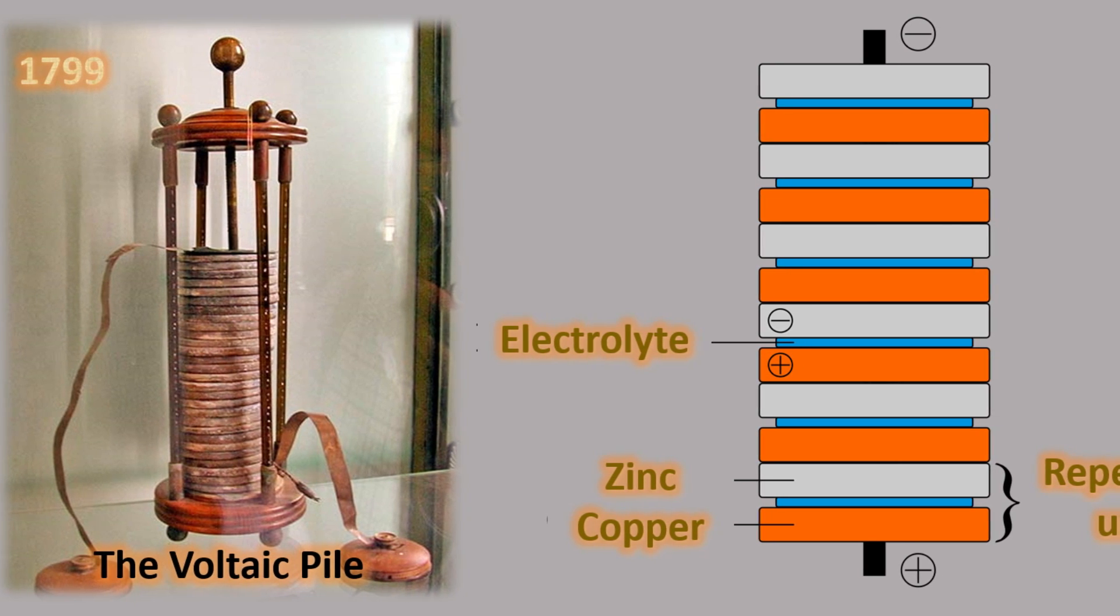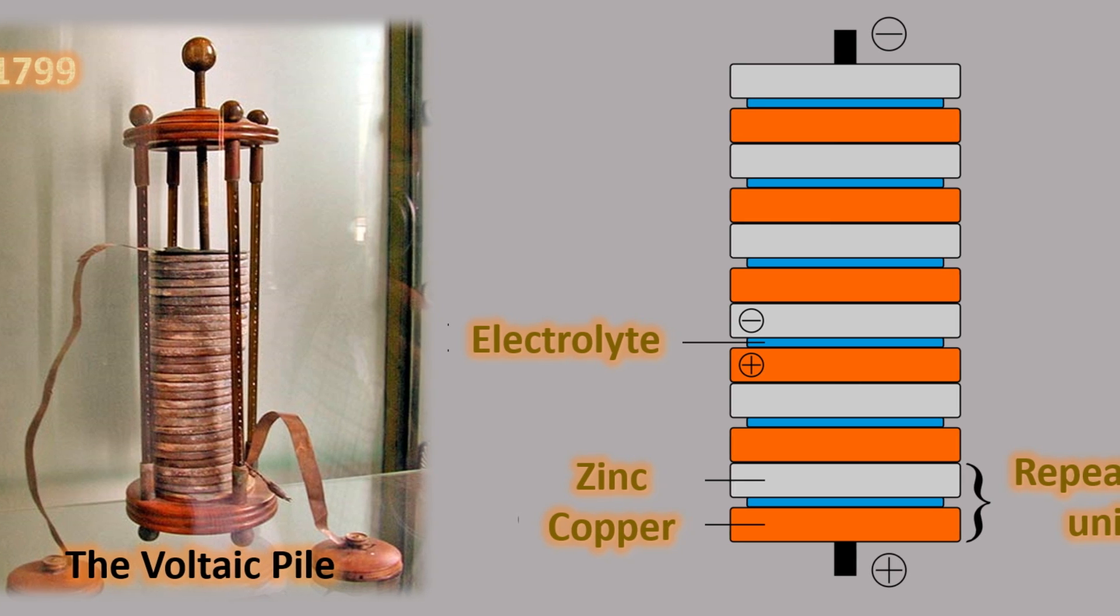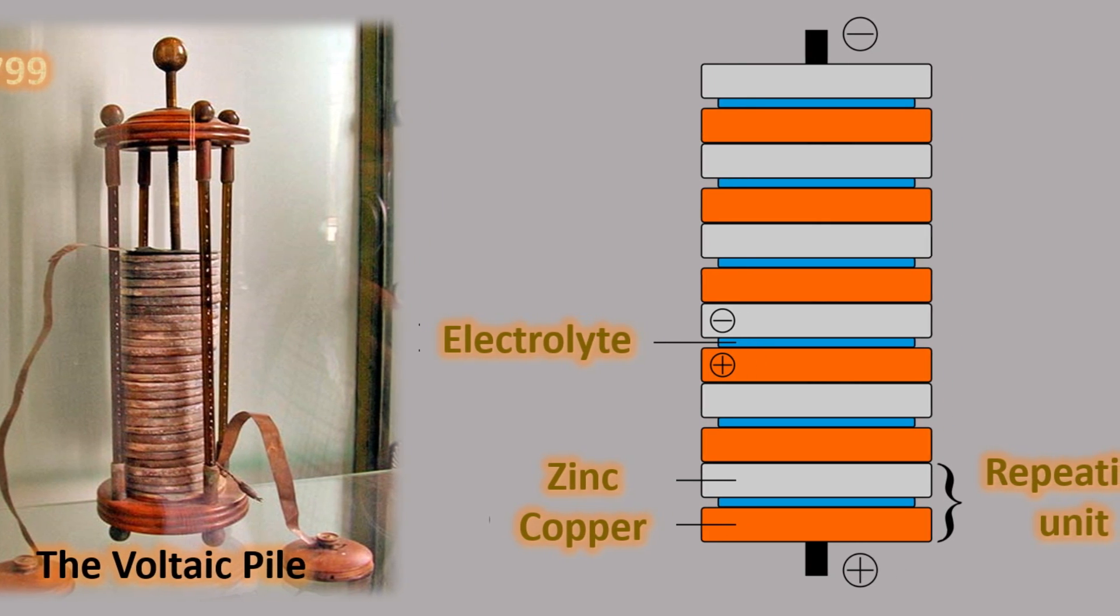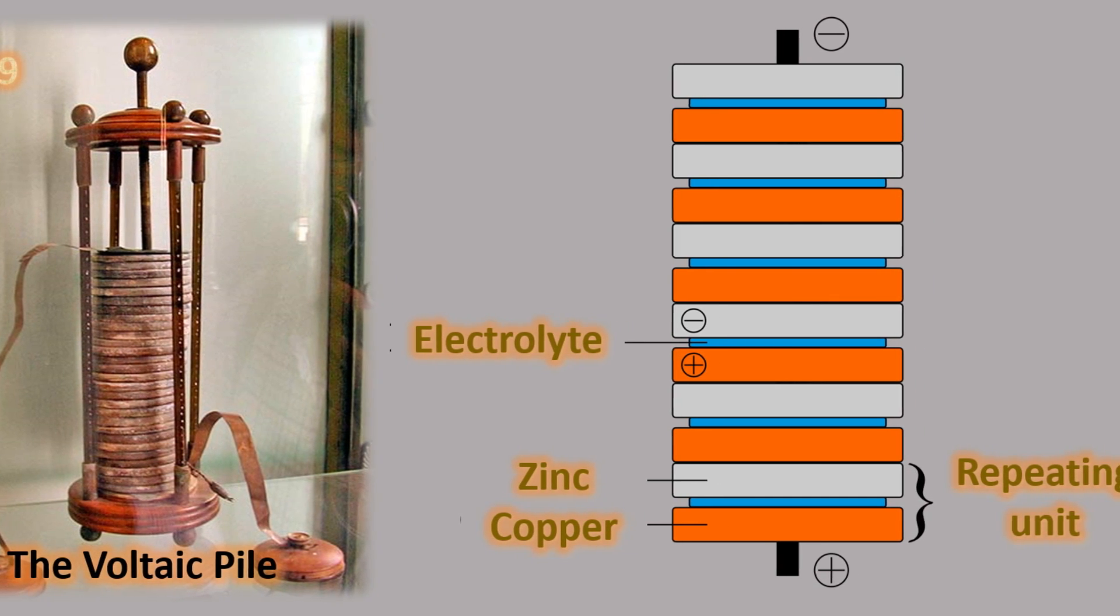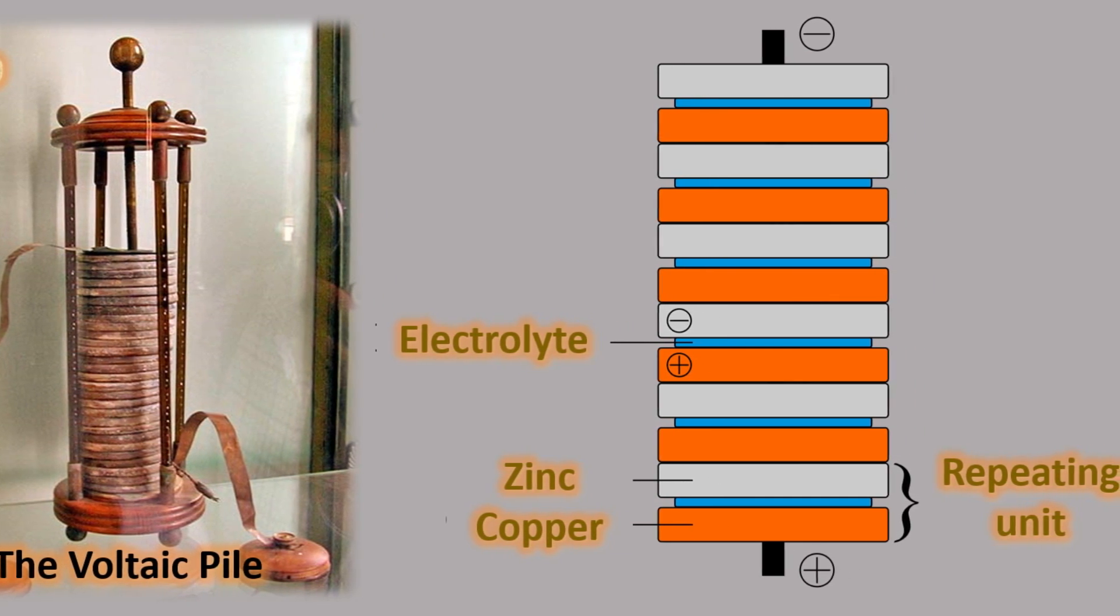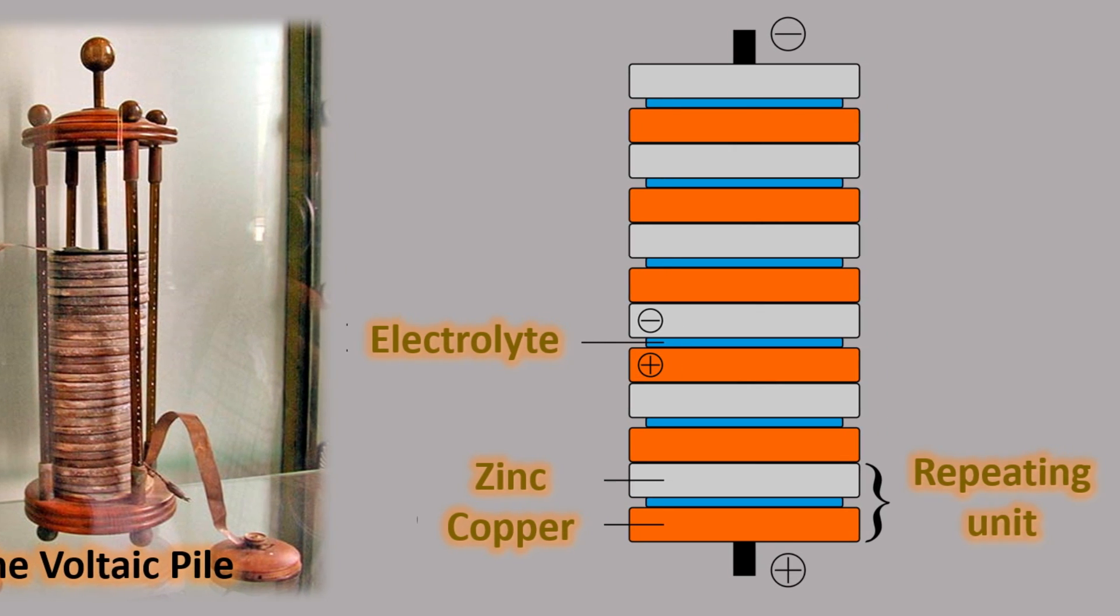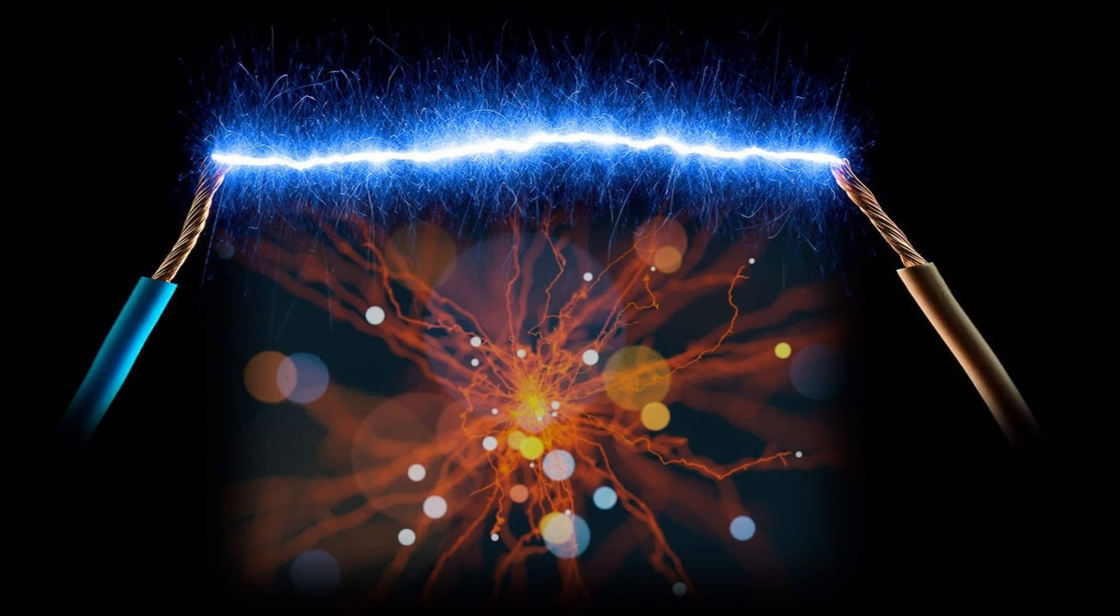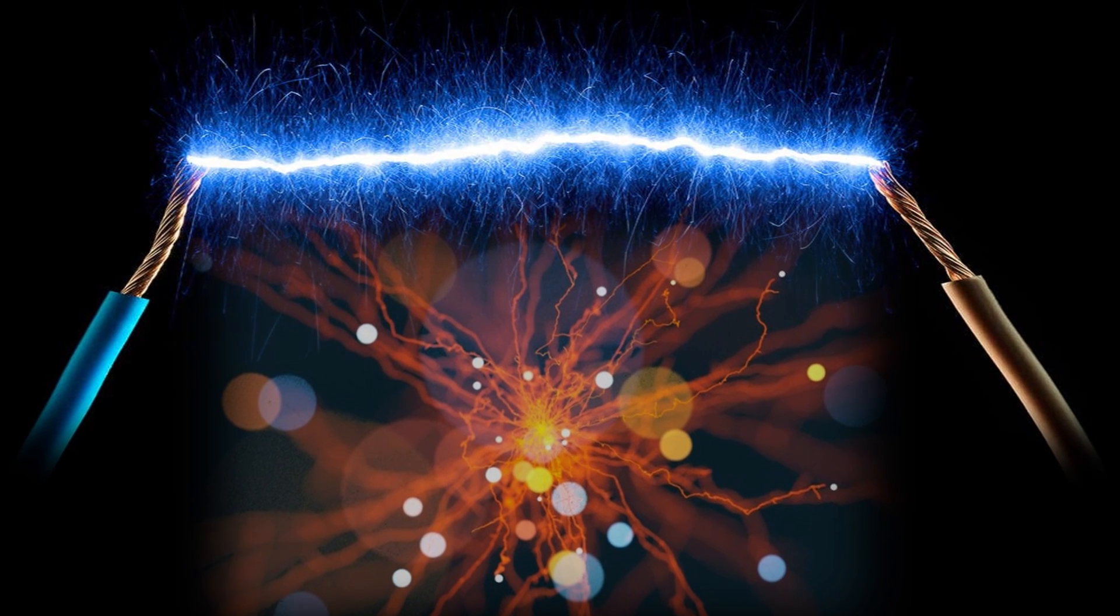The voltaic pile consists of alternating disks of silver and zinc interleaved with electrolyte. It produces a continuous flow of electrical current when the zinc disk on one end is connected with the silver disk on the other. The more disks in the pile, the stronger the electrical effect. Volta also realized there is no need for expensive silver—any pair of dissimilar metals would work.